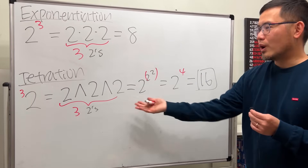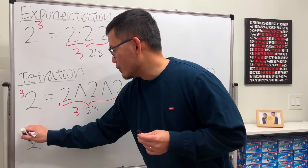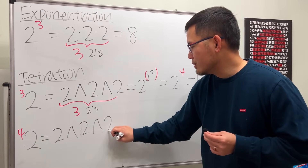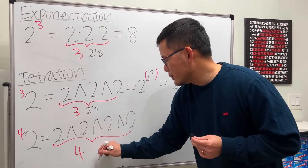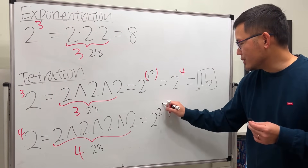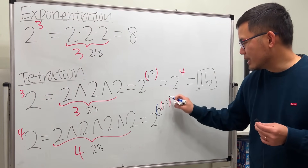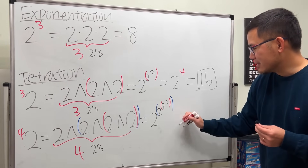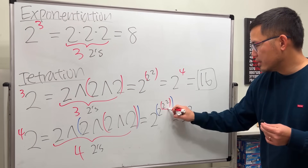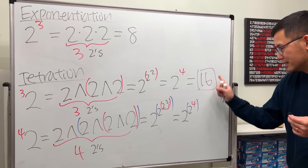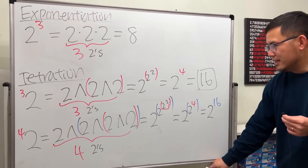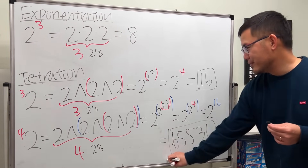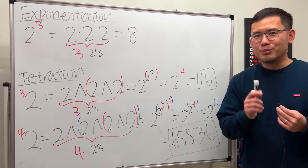That's the correct order, and it matches what we've been discussing. For 2 tetrated to 4, this means 2 to the 2 to the 2 to the 2 — four twos. Working right to left: 2 to the 2 is 4, then 2 to the 4 is 16, then 2 to the 16 is 65536. So 2 tetrated to 4 equals 65536. I think that's pretty cool!